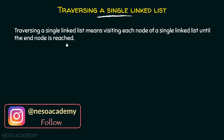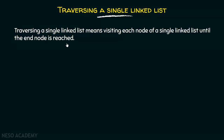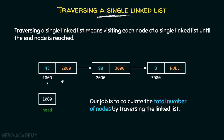This means that you are visiting each node of a list until the end node is reached. For the sake of simplicity, we will consider this example. We will assume that we already have this list and we need to traverse it. Not only do we need to traverse this list, we also have to calculate the total number of nodes in this list by traversing this linked list. We will assume that we have this linked list already, and the head pointer is pointing to the first node of the list.